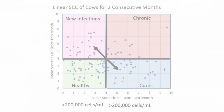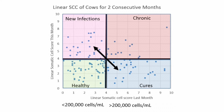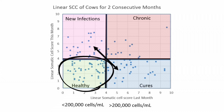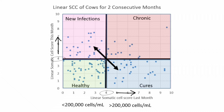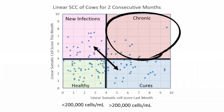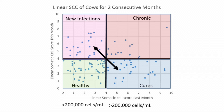One category, shown in green in our chart, is cows that had a low somatic cell count last month and a low somatic cell count this month — less than 200,000 cells per ml for both months, which is equivalent to a linear score of less than four. That group is healthy and we'd like most animals to be in that group. The second category, shown in the red box, is cows above the threshold of 200,000 or linear score of four for both months — those animals are chronic, and we'd like the fewest animals there.